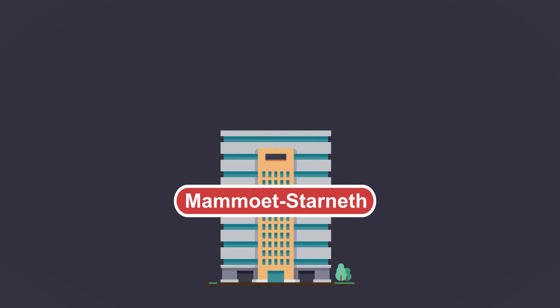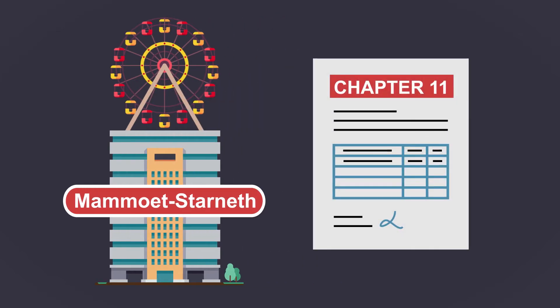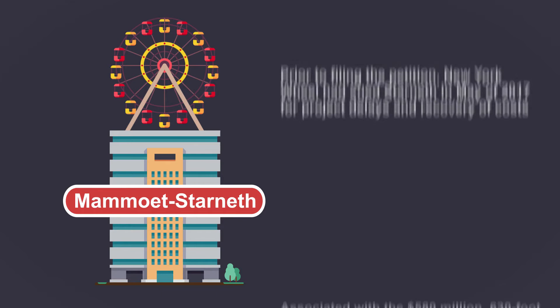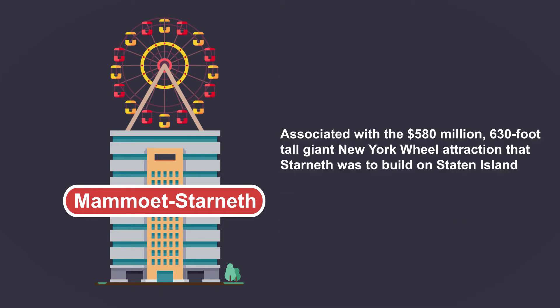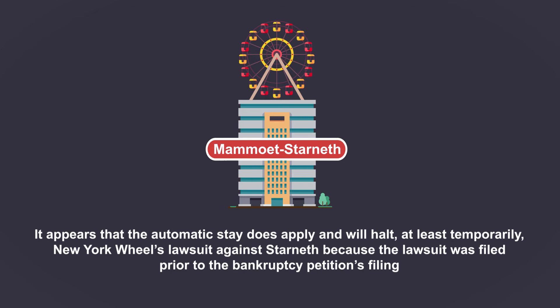In a real-life example, Mimowat Starnath, an engineering company that specializes in design and construction of giant observation wheels and structures, filed for Chapter 11 bankruptcy in December of 2017. Prior to filing the petition, New York Wheel had sued Starnath in May of 2017 for project delays and recovery of costs associated with the $580 million, 630-foot-tall giant New York Wheel attraction that Starnath was to build on Staten Island. In its bankruptcy filing, Starnath stated that an automatic stay applies and protects it from creditors and shields it from the New York Wheel lawsuit. Applying law to these facts, it appears that the automatic stay does apply and will halt, at least temporarily, New York Wheel's lawsuit against Starnath because the lawsuit was filed prior to the bankruptcy petition's filing.